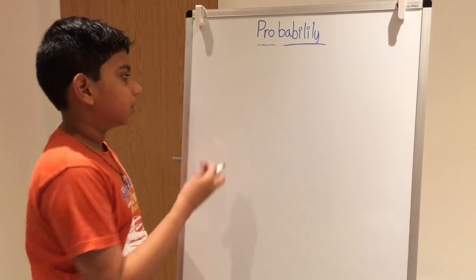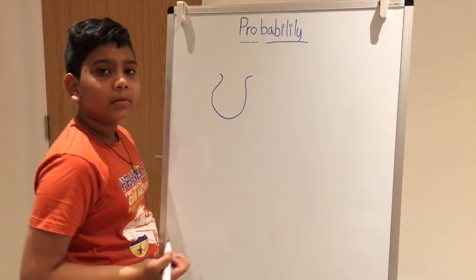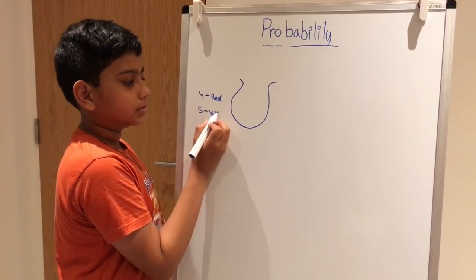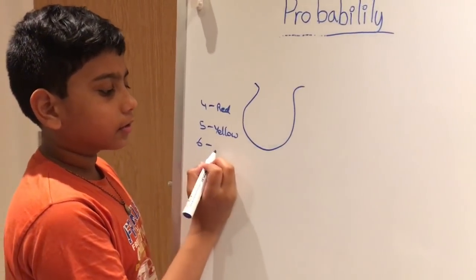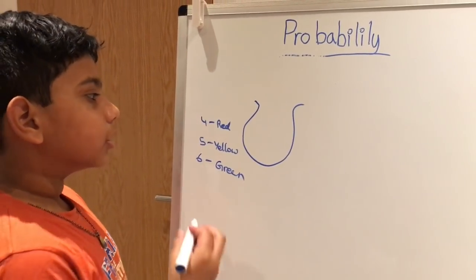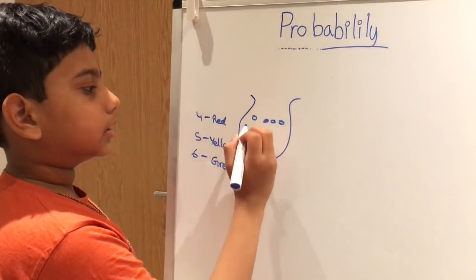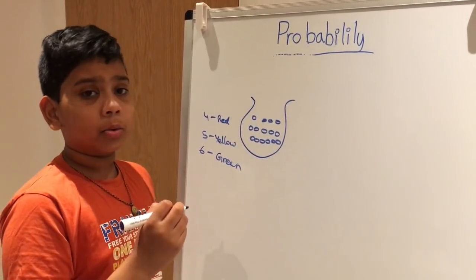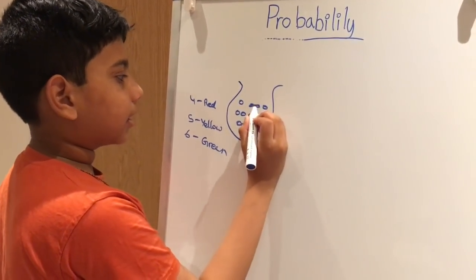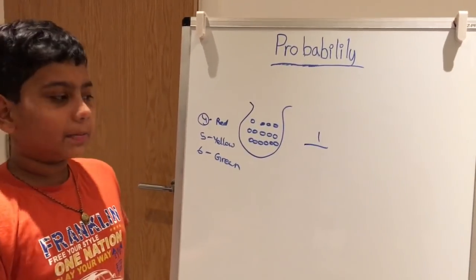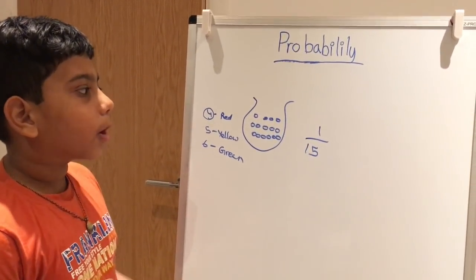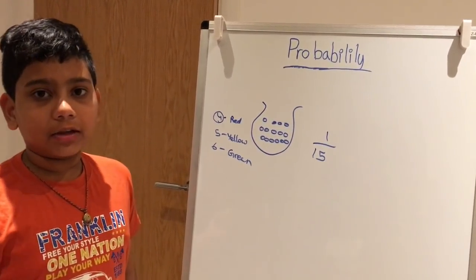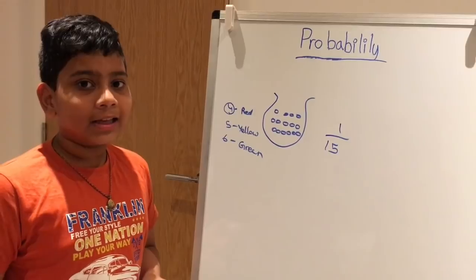Let's try a question that's not about spinners, dice, or coin tosses. You have a marble bag with four red marbles, five yellow marbles, and six green marbles — fifteen marbles total. You mix them up so you don't know which is which, then pick one yellow marble. The denominator is fifteen, so the probability of picking one yellow marble is one over fifteen, which is very unlikely on the probability scale.